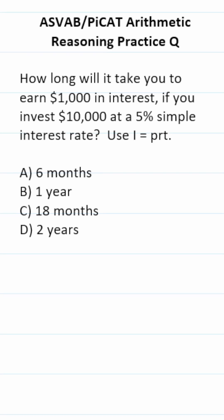ASVAB PiCAT arithmetic reasoning practice test question says, how long will it take you to earn $1,000 in interest? If you invest $10,000 at a 5% simple interest rate, use I equals P times R times T.